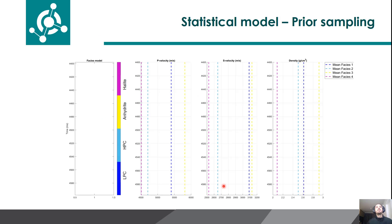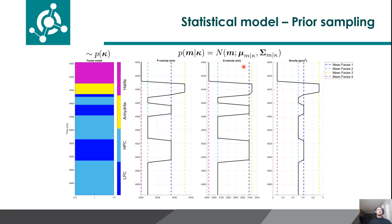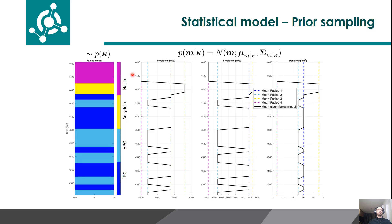For a better understanding of the prior, we show a prior sampling. We have a facies realization depending on the transition matrix, and then we have different means for each facies, color-coded by facies in the other plots. We can compute the mean of the elastic properties given this facies realization by mixing these means. Each realization gives us a different mean, which relates to a different low-frequency model. The full prior distribution accounts for all possible facies configurations — here we have three examples of possible facies configurations.